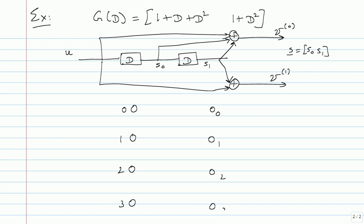The only thing you can't write without knowing G(D) completely is the output. Now that we know G(D), from state 0 with input 0 the output is 00, and with input 1 the output is 11. From state 1, the same two states 0 and 2 are reachable. From state 2 it can only go to states 1 and 3.